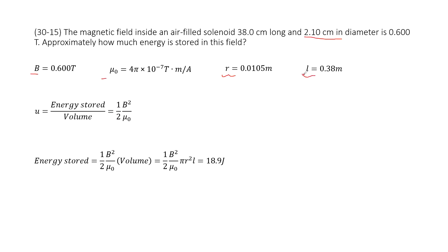Now, we have the energy density for a magnetic field as one half B squared divided by μ₀. And then we need to find how much energy is stored. This energy density is the total energy divided by volume, so the total energy can be written as the energy density times the volume.